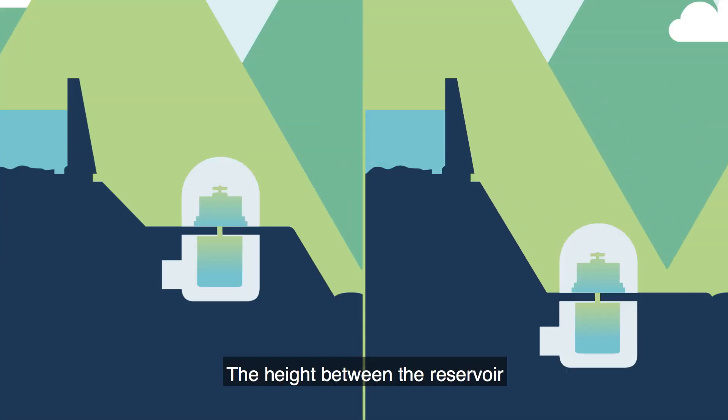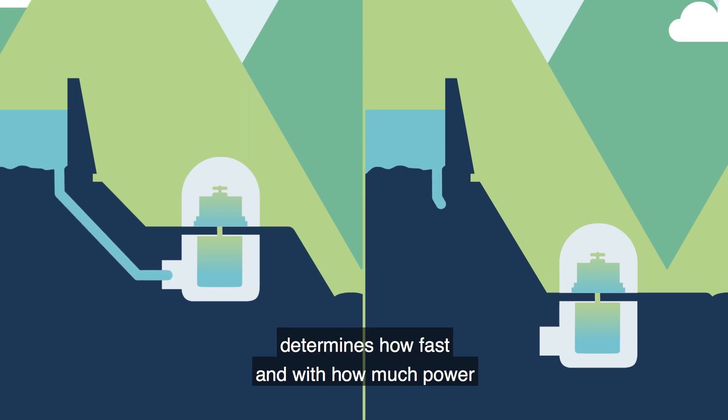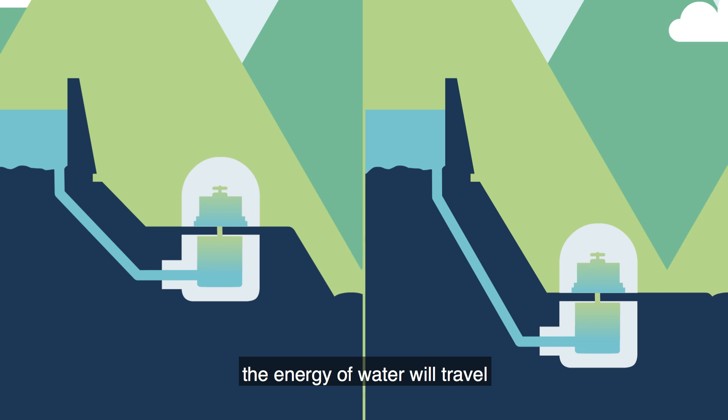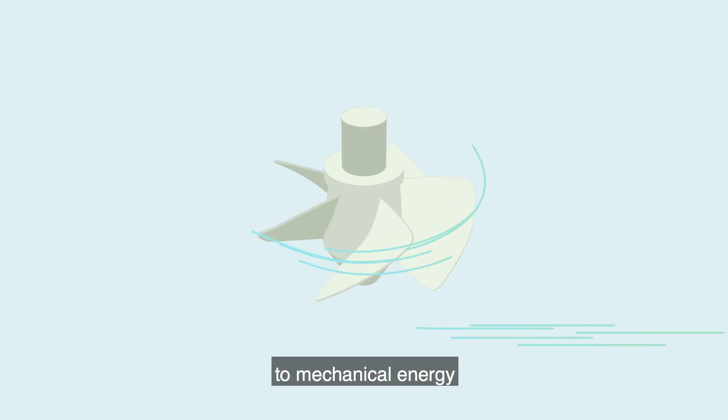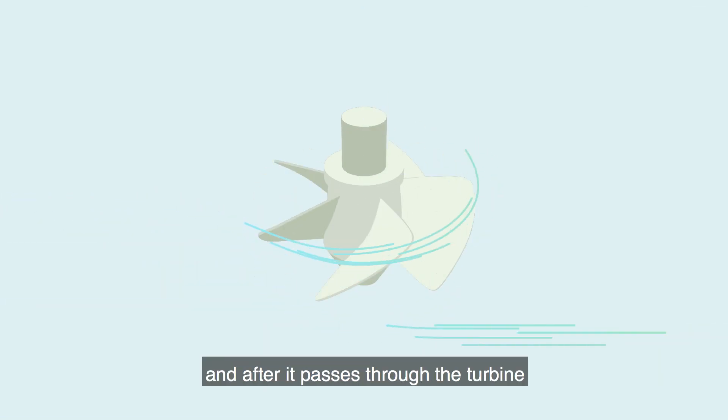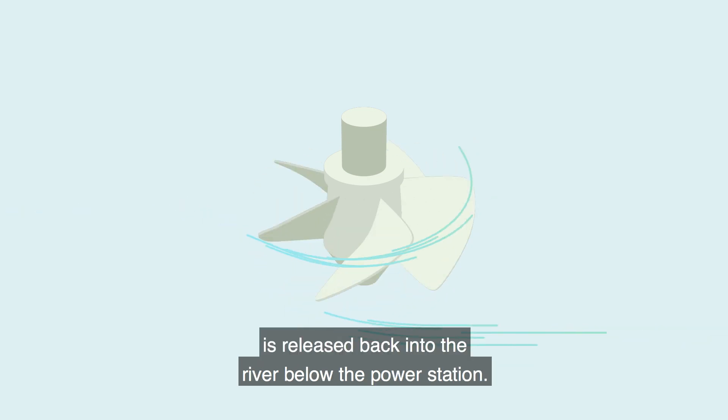The height between the reservoir and the hydropower station determines how fast and with how much power the energy of water will travel and be transferred to electrical energy. The energy of the moving water has now transferred to mechanical energy and, after it passes through the turbine, is released back into the river below the power station.